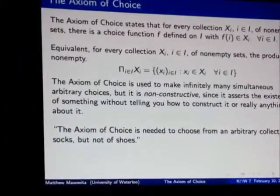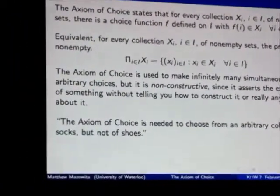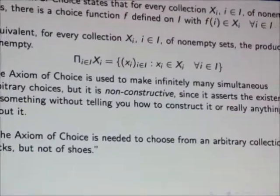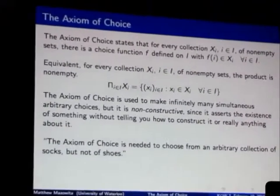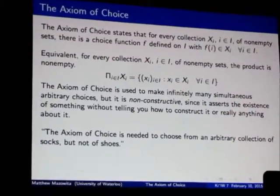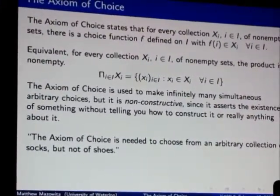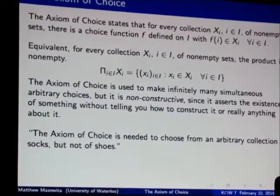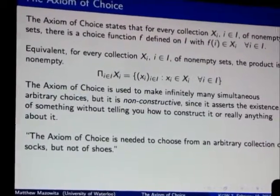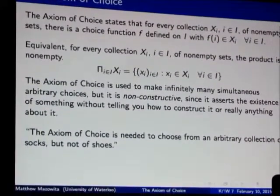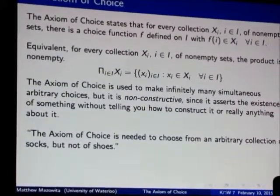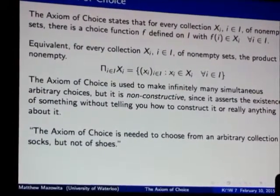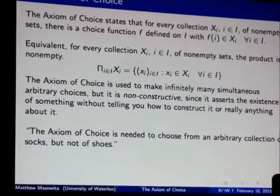You use the axiom of choice when you need to make infinitely many arbitrary choices. Because if you have a rule for choosing an element from each of your non-empty families, then you don't need the axiom. It's only for when you don't have any technique by which to choose an element from each of your non-empty sets, then you have to invoke the choice. This is why it's non-constructive. Because it asserts the existence of this choice function or this element of the product. But it doesn't tell you how to construct it, how to find it, or really anything else about it.